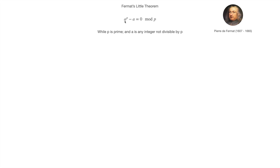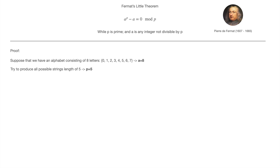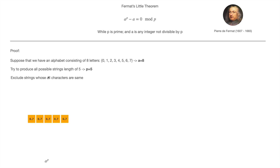In other words, a and p should be co-primes. Let's prove this theorem with the necklace method. Suppose we are working on an alphabet consisting of eight characters, 0 to 7, so a equals 8 in this case. We are going to produce all possible strings of length 5, so p equals 5. Thereafter we will exclude strings whose all characters are the same from the set of all possible strings.